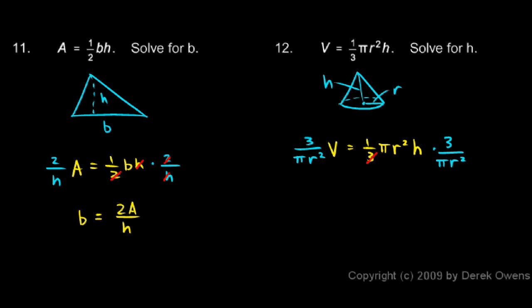And when I do that, the 3's on the right will cancel out, and so will the pi, and so will the r squared. And I'm left with h all by itself is equal to that.